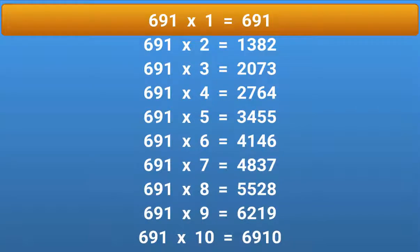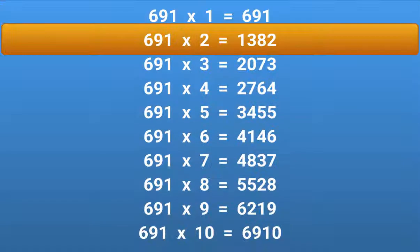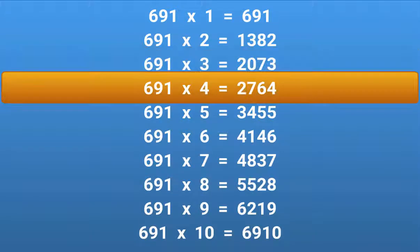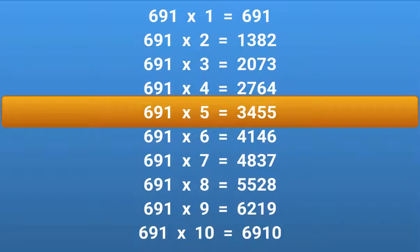691 × 1 = 691. 691 × 2 = 1382. 691 × 3 = 2073. 691 × 4 = 2764. 691 × 5 = 3455.